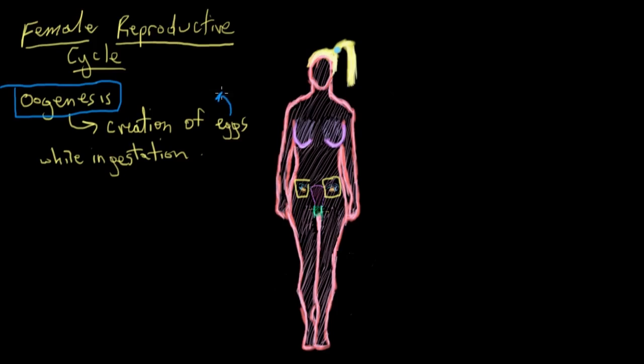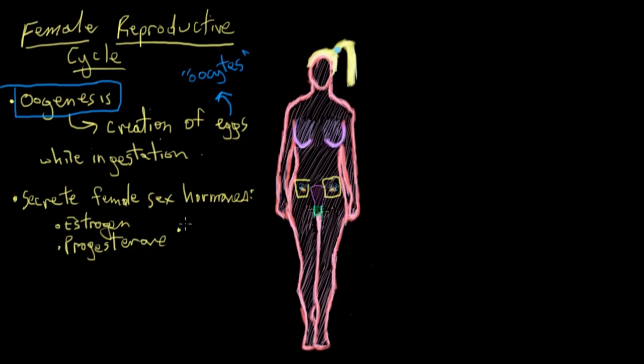Another word for egg is oocyte. After an egg matures, it's pushed out of the ovary in a process called ovulation. The other major function of the ovaries is to secrete the female sex hormones: estrogen, progesterone, and one called inhibin. We'll talk about their functions a little bit later on.